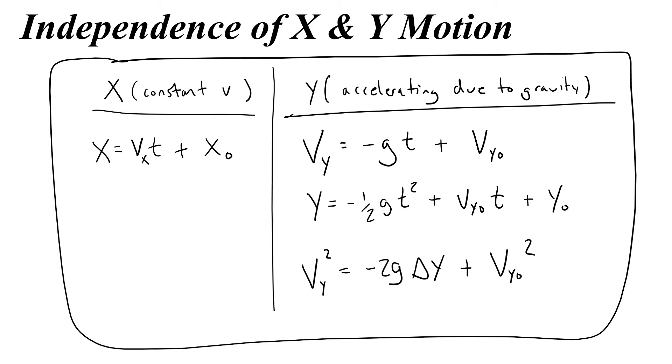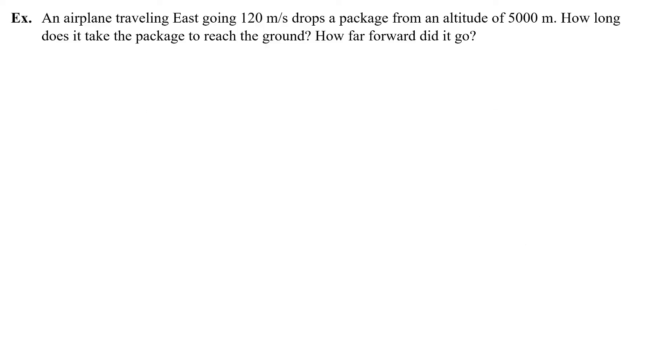Alright, let's do a problem. An airplane traveling east going 120 meters per second drops a package from an altitude of 5,000 meters. How long does it take the package to reach the ground and how far did it go? Okay, so let's start by drawing a little picture of what's going on. Here we have a plane, and the plane drops a package. So here's the package.